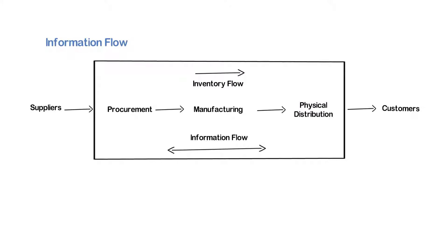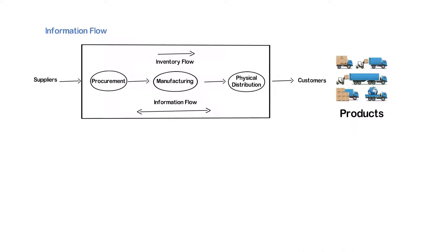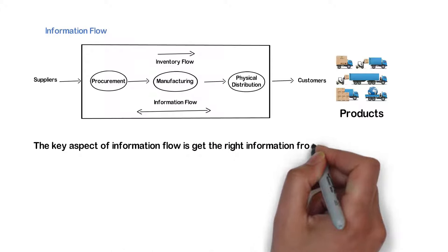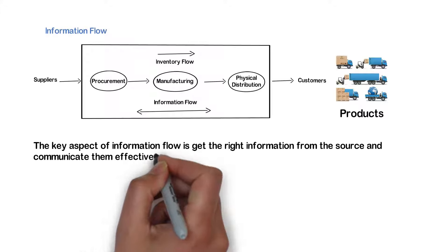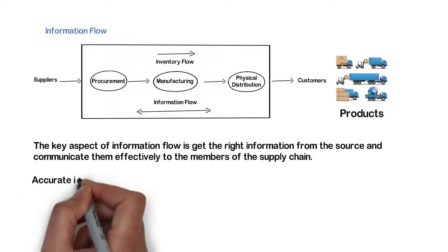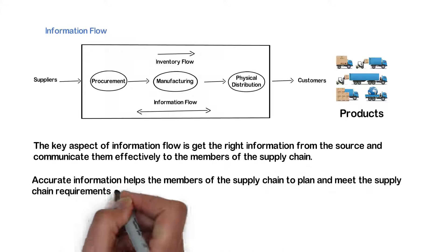Let us now look into the impact of information flow in integrated logistics system. Information flow happens across the supply chain in both directions to enhance the performance of the supply chain. This integrates the process of procurement, manufacturing and physical distribution of the materials to satisfy the requirements of products to different locations at the required time along the supply chain. The key aspect of information flow is to get the right information from the source and communicate them effectively to the members of the supply chain. Accurate information helps the members of the supply chain to plan and meet the supply chain requirements efficiently.